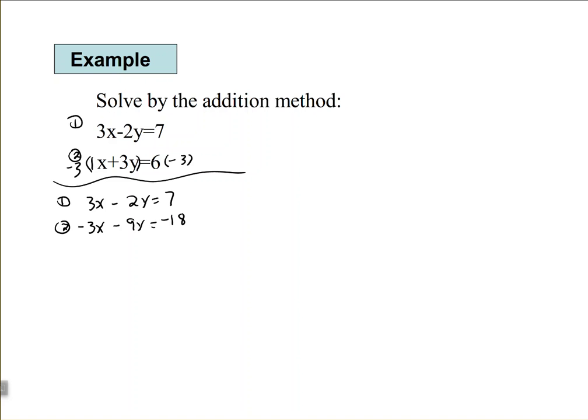Now, here, in step 2, once we get one of those variables to have opposite coefficients through multiplication, then we want to add the two equations together by combining the like terms.